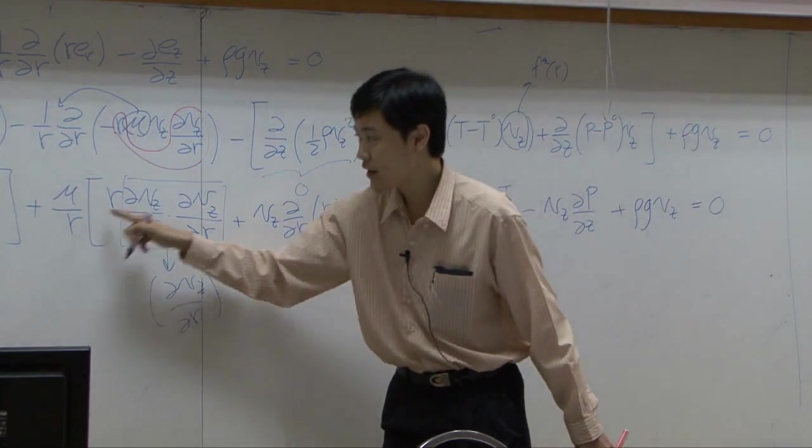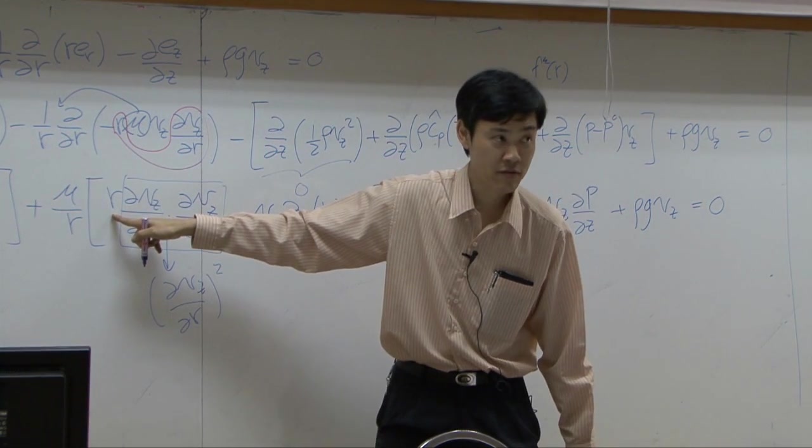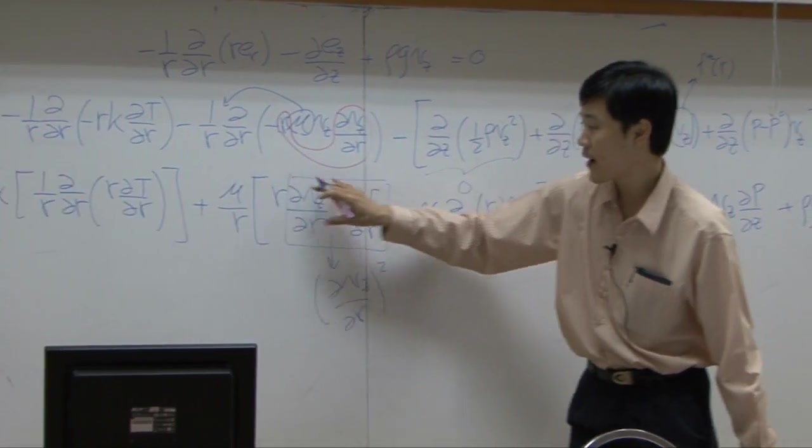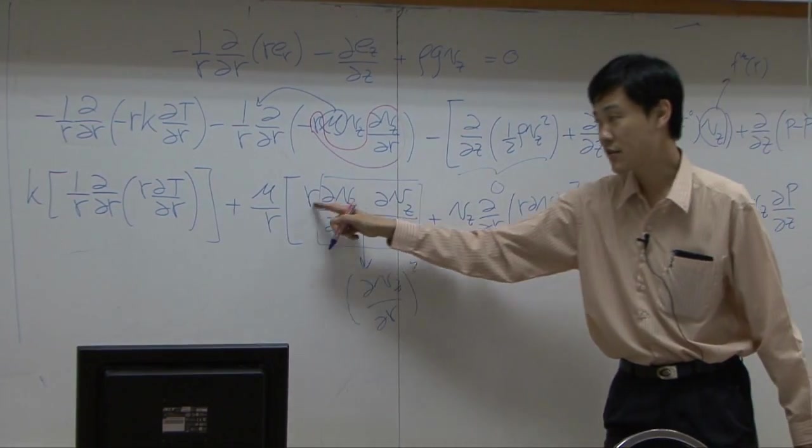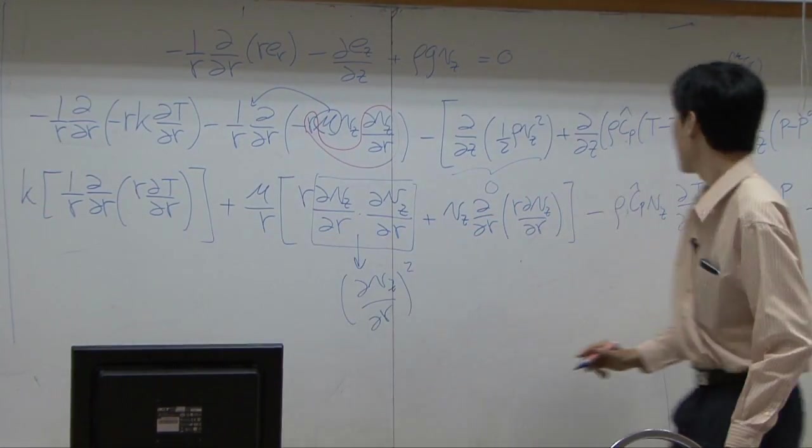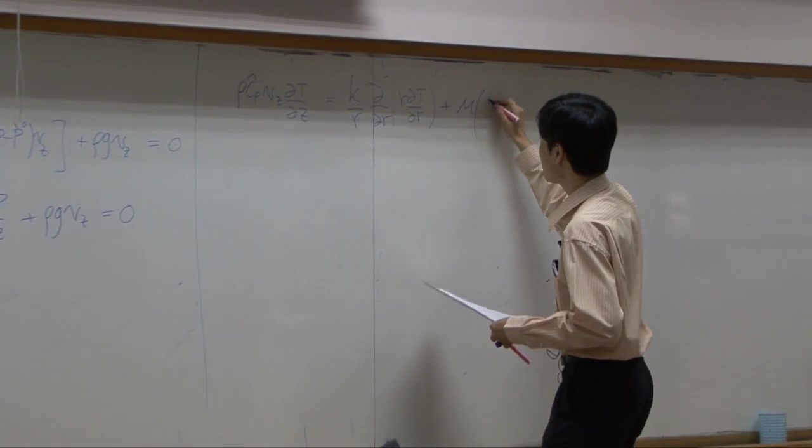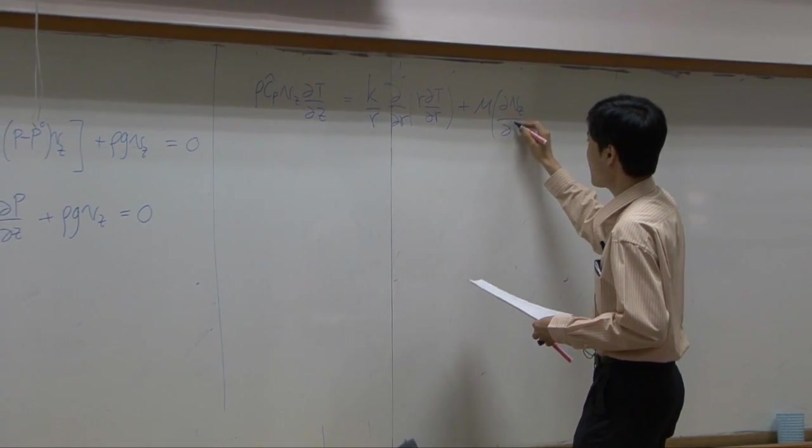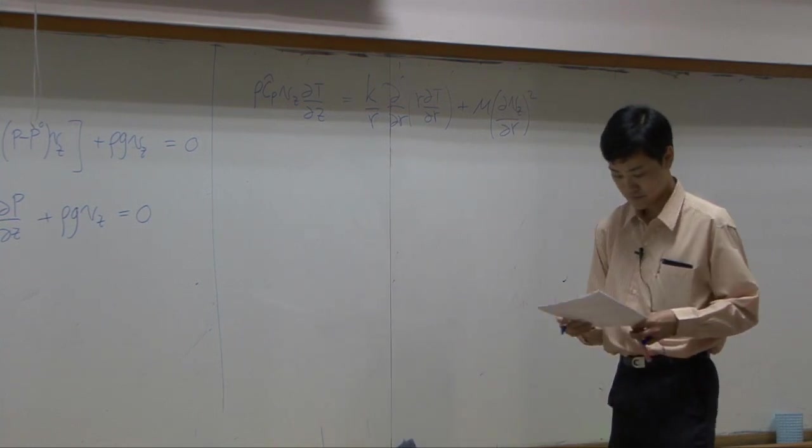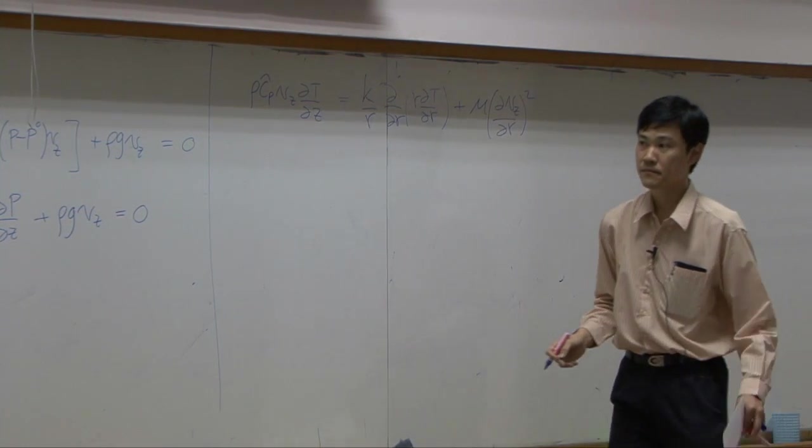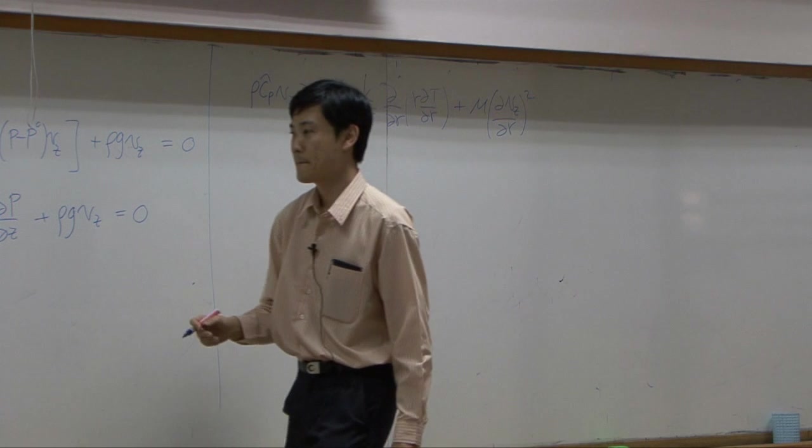And r here and r there cancel out. So if you multiply the whole thing by mu over r, this r and this r cancel out. At the end, you have mu dVz by dr squared.